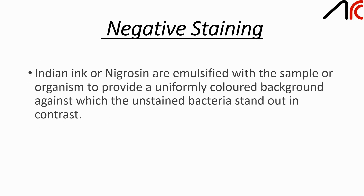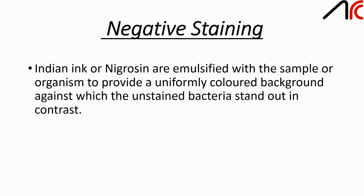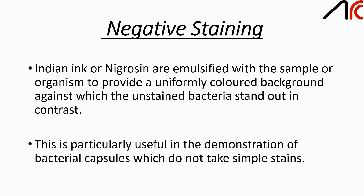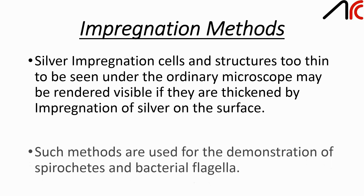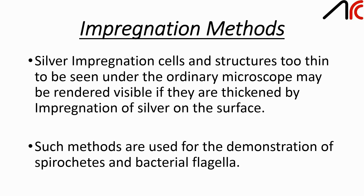Negative staining uses Indian ink or nigrosine. It is emulsified with a sample or organism to provide a uniformly colored background against which the unstained bacteria stand out in contrast. This is particularly useful in the demonstration of bacterial capsules which do not take a simple stain. In impregnation staining, silver impregnation is used for cells and structures which are too thin to be seen under the ordinary microscope — they may be rendered visible if thickened by silver on their surface. Such methods are used for demonstration of spirochetes and bacterial flagella.